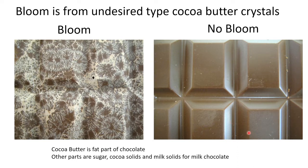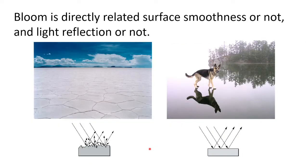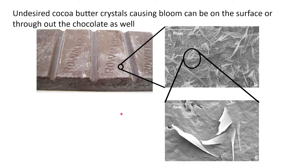Shininess is really dependent on the mold — you could have a matte finish that determines how shiny something actually is. Cocoa butter is the fat part of the chocolate, while the other parts are sugars, milk solids, and cocoa solids. Bloom is directly related to surface smoothness and light reflection — like a dry desert versus a very shiny frozen lake that reflects light like a mirror. Cocoa butter crystals can cause bloom on the surface or throughout the chocolate. Here we're looking at the surface under a microscope at 50 microns and 5 microns, and you can clearly see the surface is rough and not perfectly smooth.